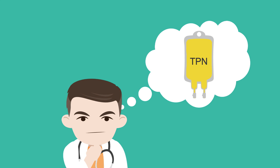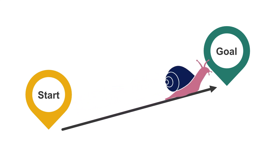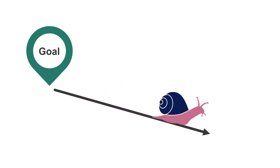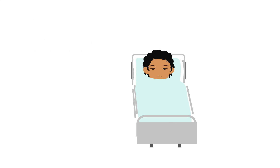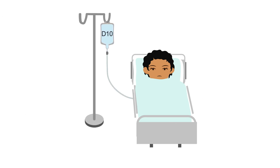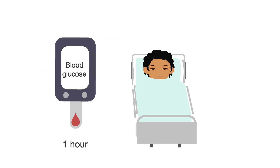Finally, how do we know when it's time to wean TPN? When your patient's GI tract is ready to be used, don't stop their TPN immediately. Just as it's important to slowly ramp TPN up to goal, it's important to wean TPN correctly as well. It's not recommended to abruptly stop a TPN infusion because doing so can cause reactive hypoglycemia. If TPN has to be stopped abruptly, replace it with D10 — 10% dextrose solution — for four hours and check a finger stick blood sugar one hour after the D10 has been stopped.